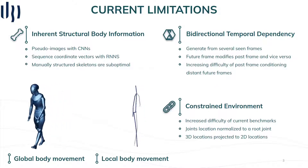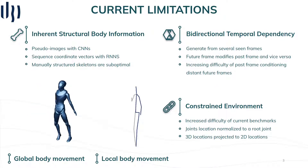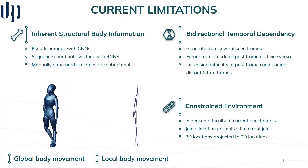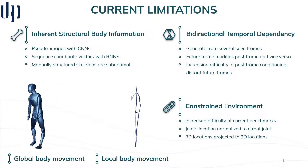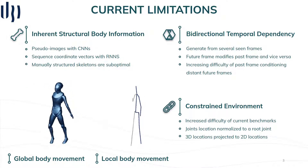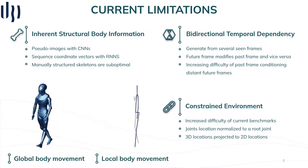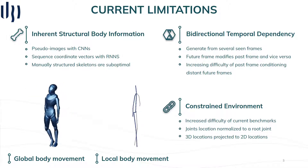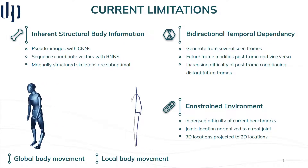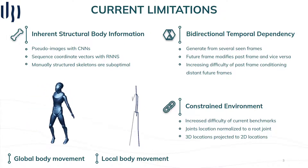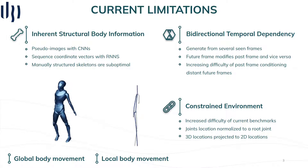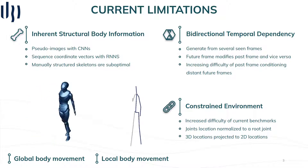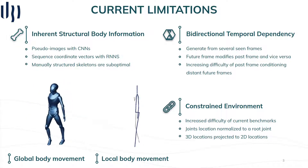Current approaches are usually based on LSTMs, gated recurrent units, or seq-to-seq models, assuming handcrafted representations with pseudo-images or sequence-coordinate vectors, which loses some inherent structural body information. By generating actions from several seed frames, it also potentially limits their scalability regarding bidirectional temporal dependency, where a future frame modifies a past frame and there is increasing difficulty of a past frame conditioning distant future frames. Due to the sophistication of human actions, the state-of-the-art is also focused on local body movement, normalizing joint locations to a root joint and projecting 3D locations to 2D locations.